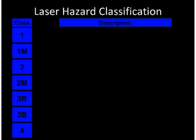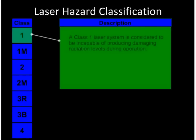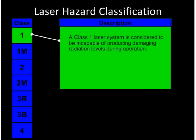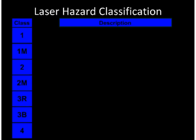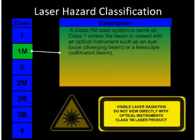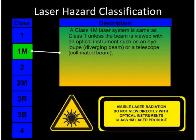Laser hazard classification. A hazard classification scheme is used to define a laser's potential to cause an injury to the eye or skin. Class 1 is not considered capable of causing an injury. Class 1M is not considered capable of causing an injury except when viewed through specific types of magnifying optics such as a hand magnifier or telescope.